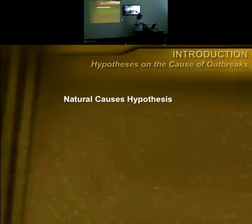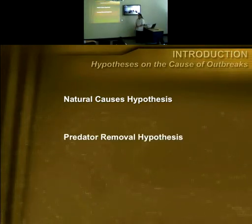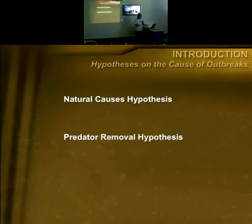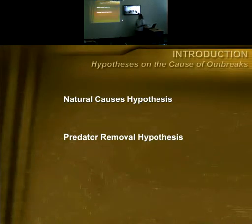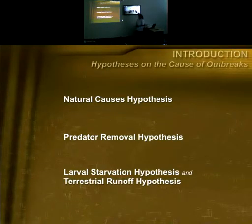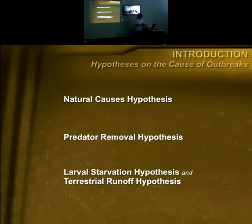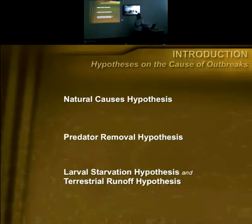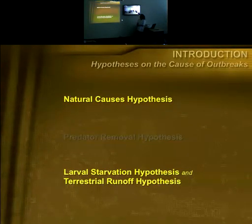The second view states that outbreaks are due to anthropogenic changes to the environment. One of the earliest hypotheses is the predator removal hypothesis, which assumes high rates of predation on post-settlement and adult starfish, and that outbreaks arise as a consequence of release from predation due to over-exploitation of predators. The next is the larval starvation and terrestrial runoff hypothesis — basically, enhanced food supply for larvae due to terrestrial runoff. My project will mostly focus on the natural causes hypothesis and the larval starvation and terrestrial runoff hypothesis.